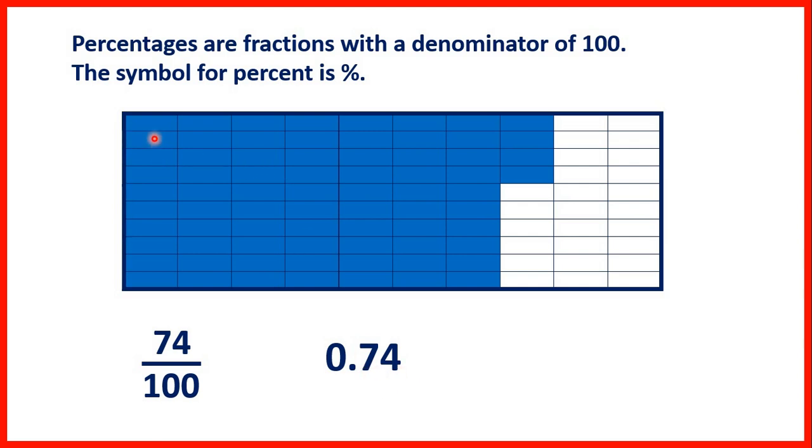Notice also that what we have is the same as 7 tenths and 4 hundredths, so that's why we have 0.74. But we can also write what we see here as a percentage. That's 74 percent.